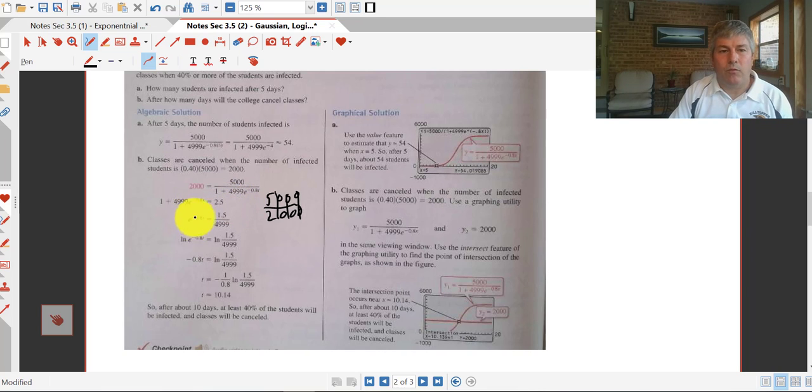They subtracted 1 from both sides, so that's how we got 1.5, and they divided by 4,999. So 1.5 divided by 4,999 equals e to the negative 0.08t. Natural log both sides, solve for t, and we get t equals 10.14. So it'll take about 10 days before we infect 2,000 students.